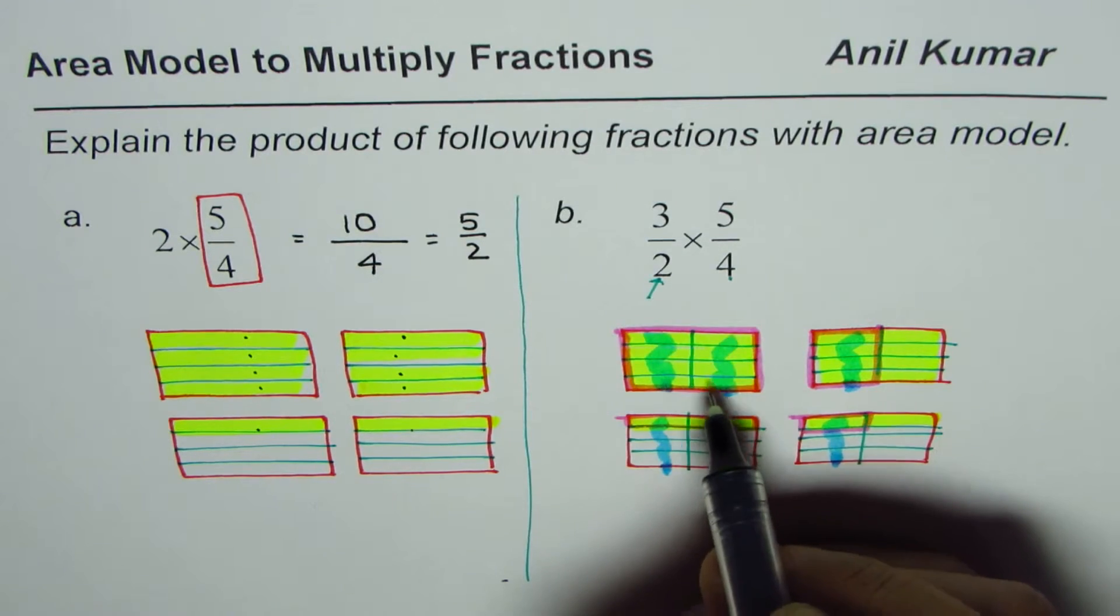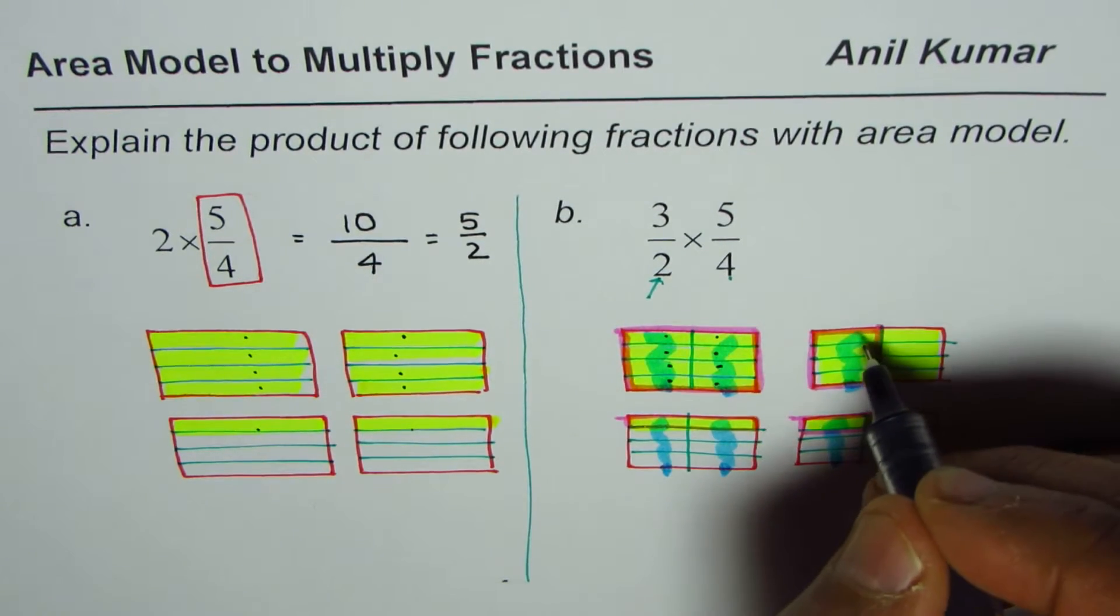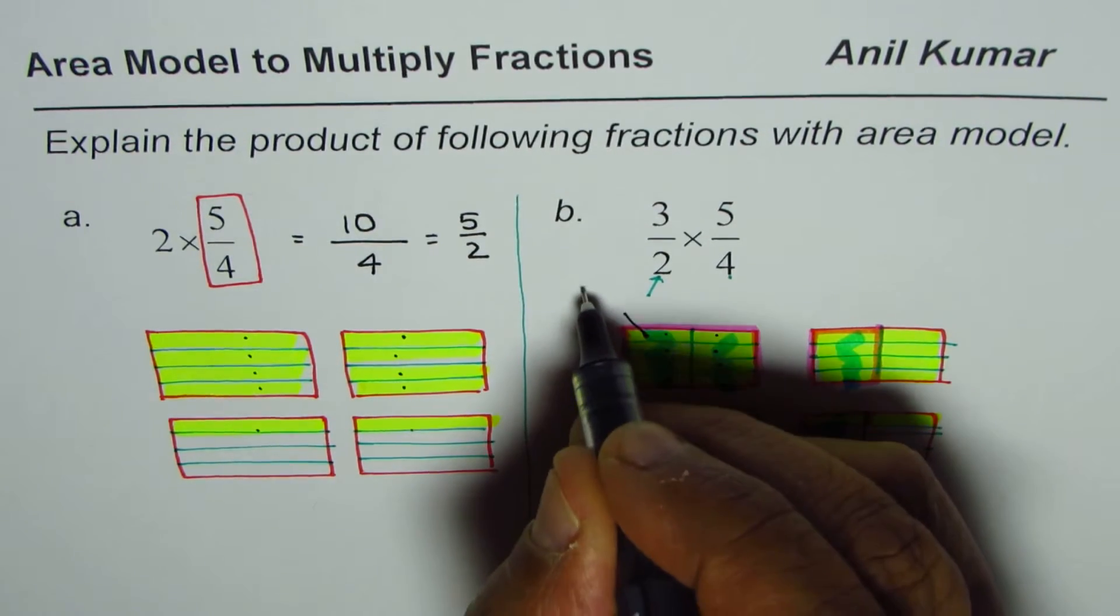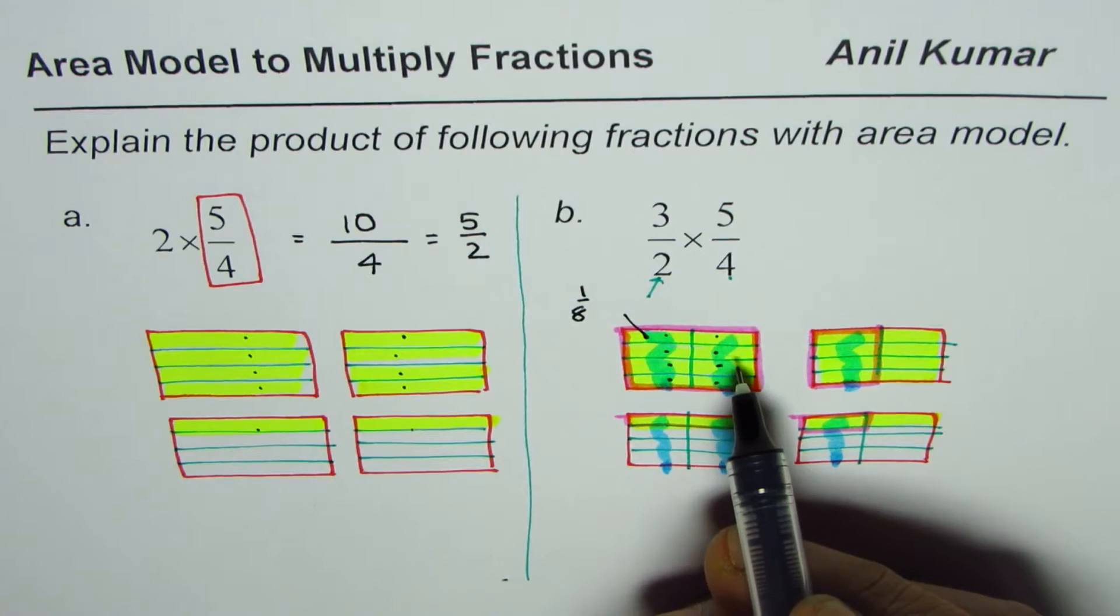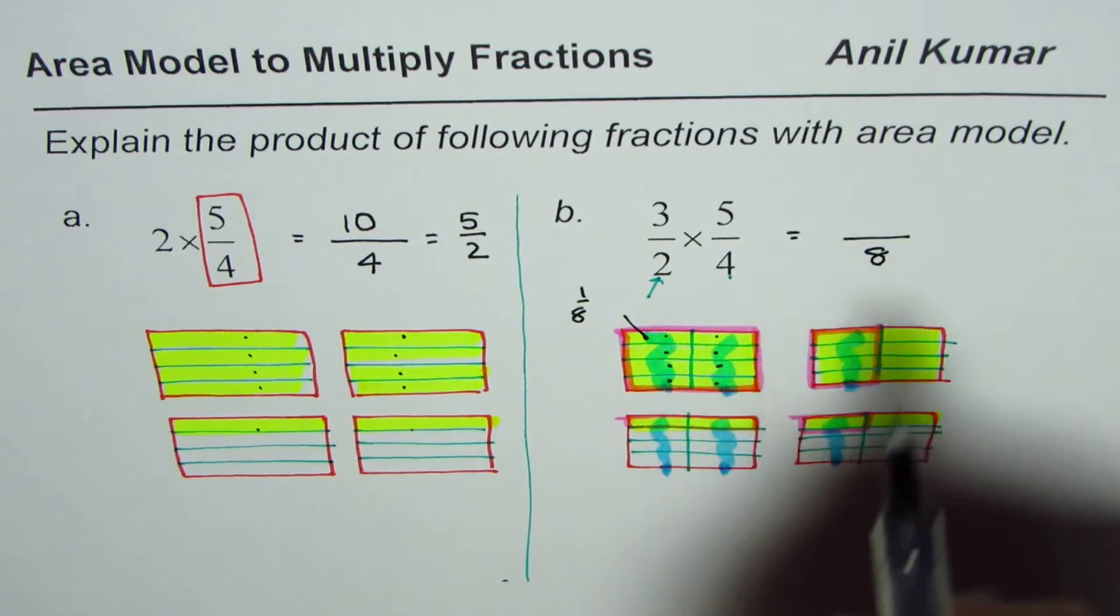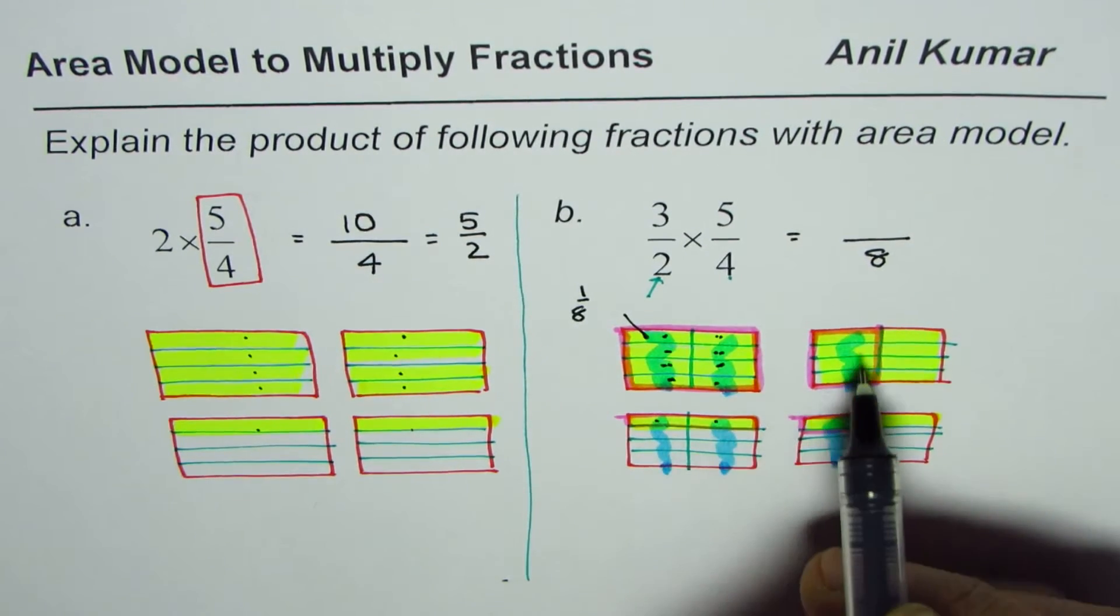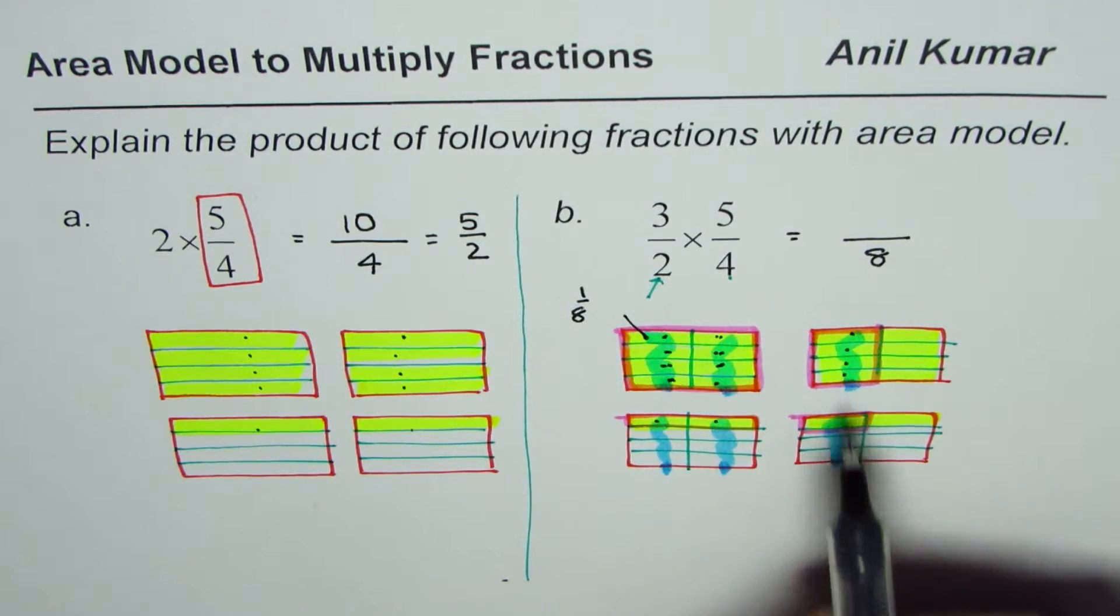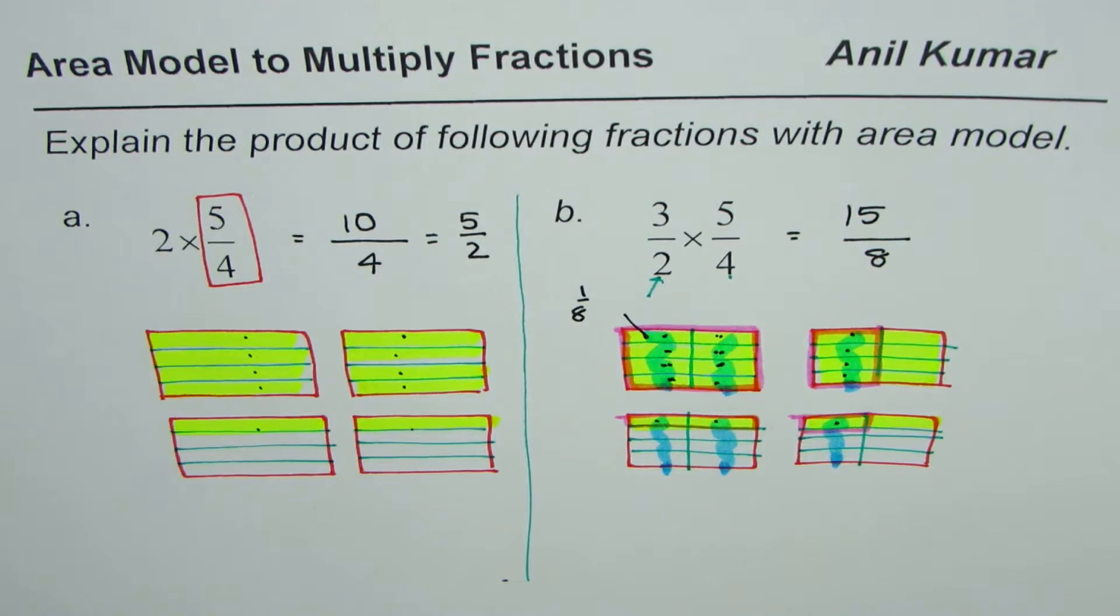Each one here represents—so there are 8 parts. 1, 2, 3, 4, 5, 6, 7, 8. Each is 1 eighth. Each is 1 out of 8. So how many 1 out of 8s do we have? You can count and then write down your answer. So you can count 1, 2, 3, 4, 5, 6, 7, 8, 9, 10, 11, 12, 13, 14, and 15. 15 eighths.